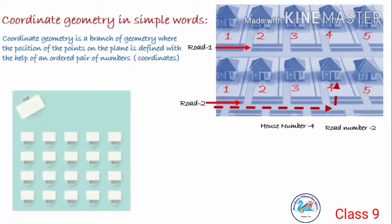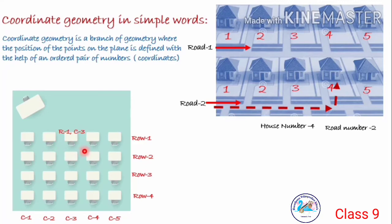Let's take some more examples. In an examination hall, if you want to identify your seat exactly and easily, you need to know in which row and which column your seat lies. For example, R1, C3 means row 1, column 3. Here, two parameters — which row and which column. Unless you use these two parameters, it is difficult to identify your seat. If you know these two parameters, which row and which column, it is easy to identify your exact position in an examination hall.